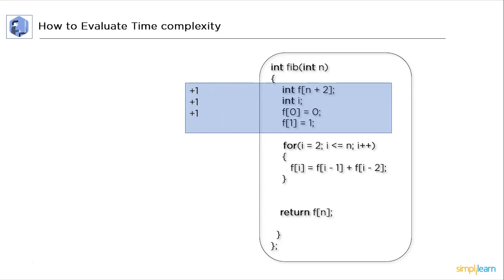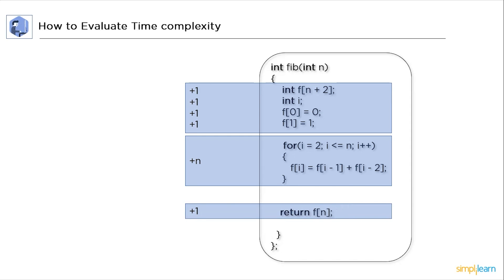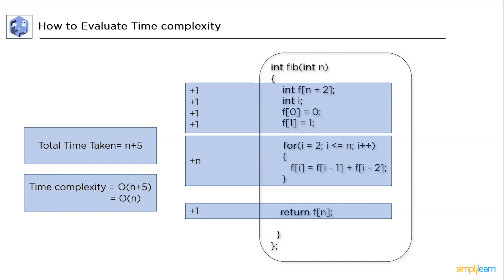The first part consists of some independent statements which give constant time for each statement. Next, the second part is the for loop — since this loop runs n times, it gives linear time complexity of O(n). The third part also has constant time complexity. Taking the total run time, which comes out to be n plus 5, we then discard the constant part since it does not affect the overall time complexity. The final time complexity is O(n).